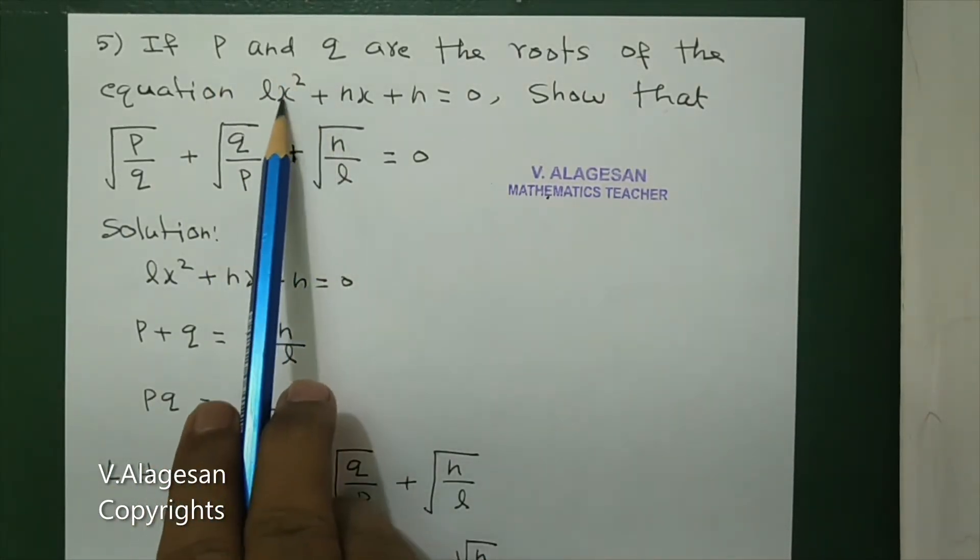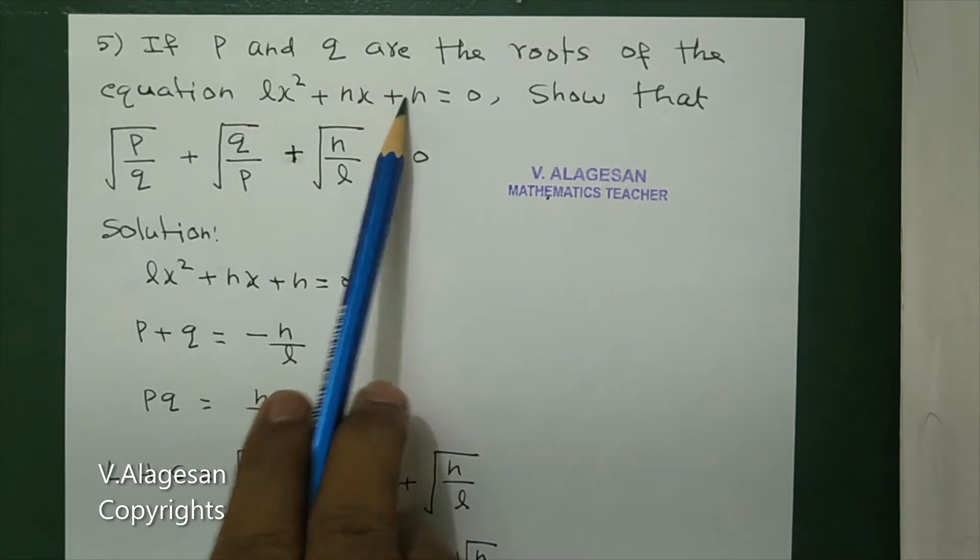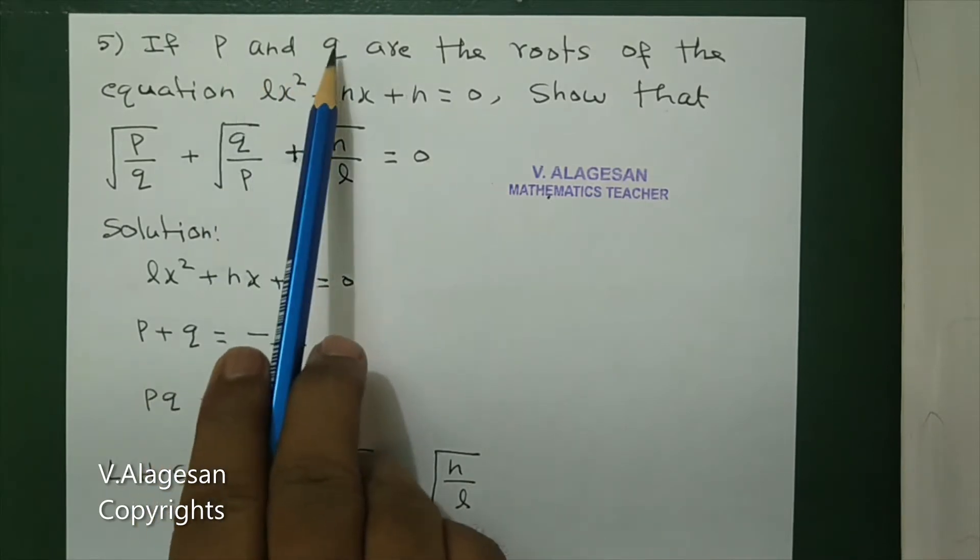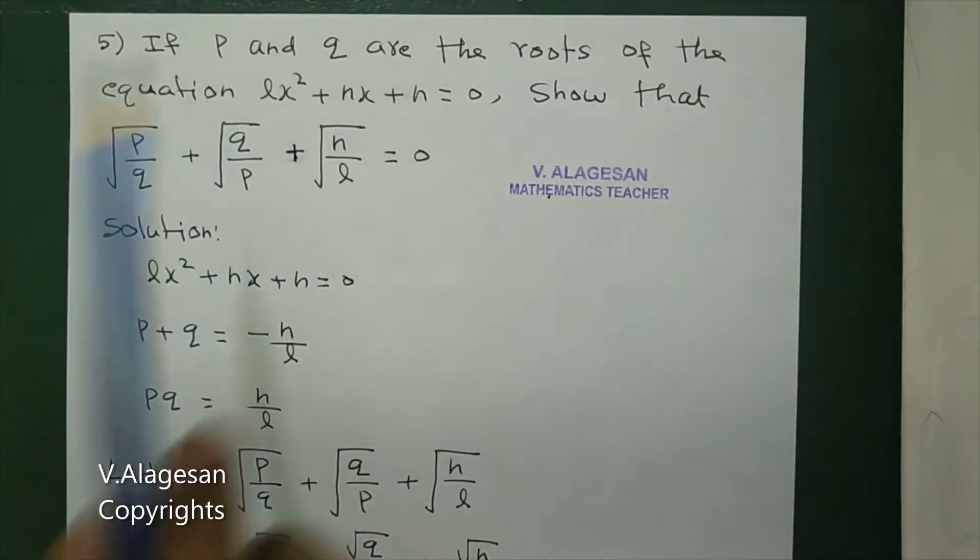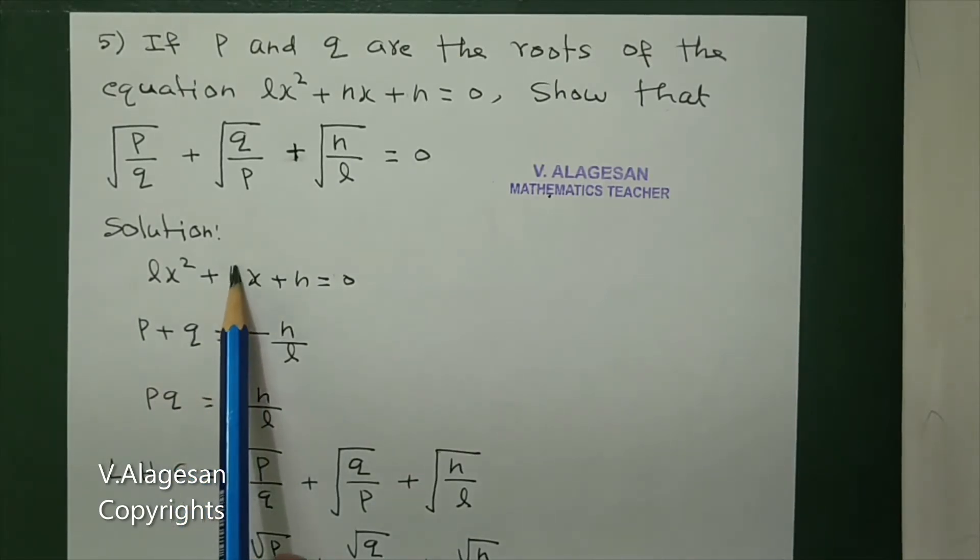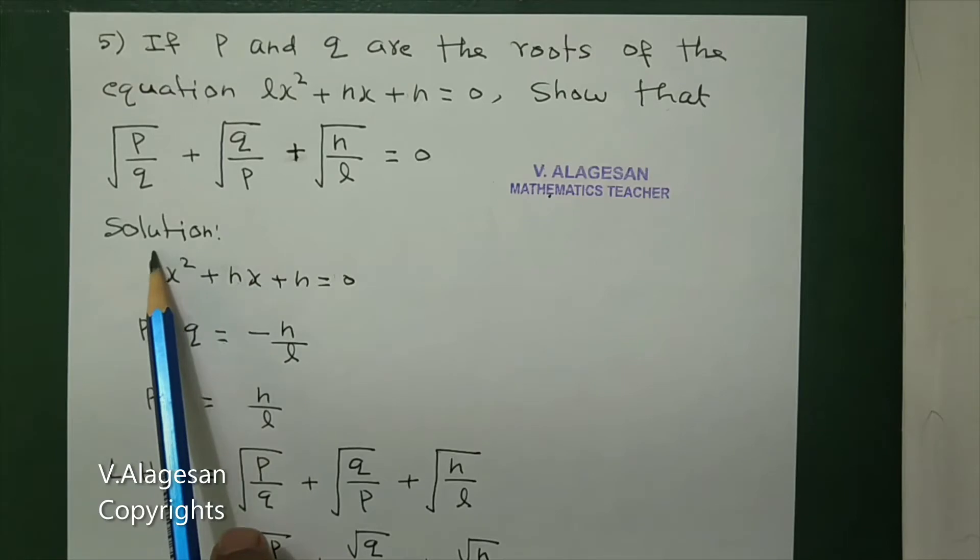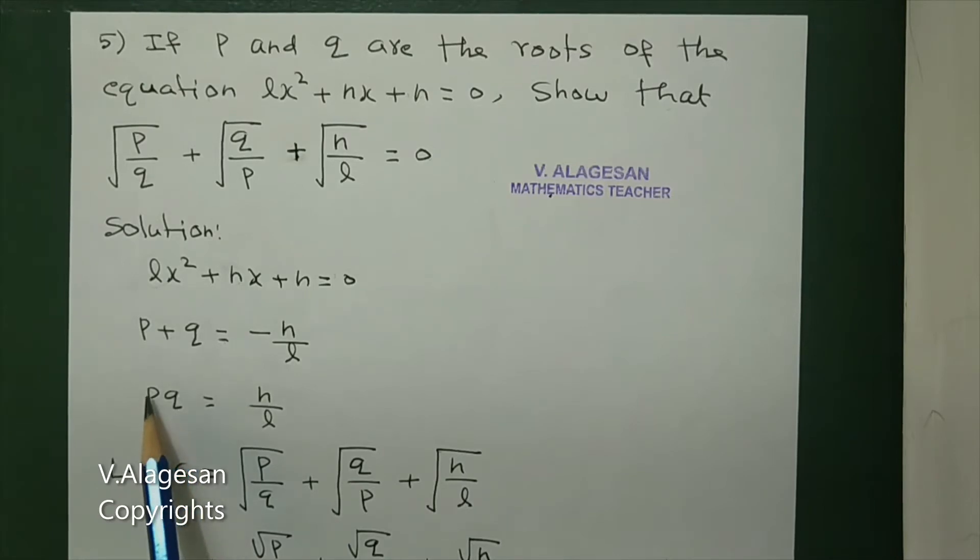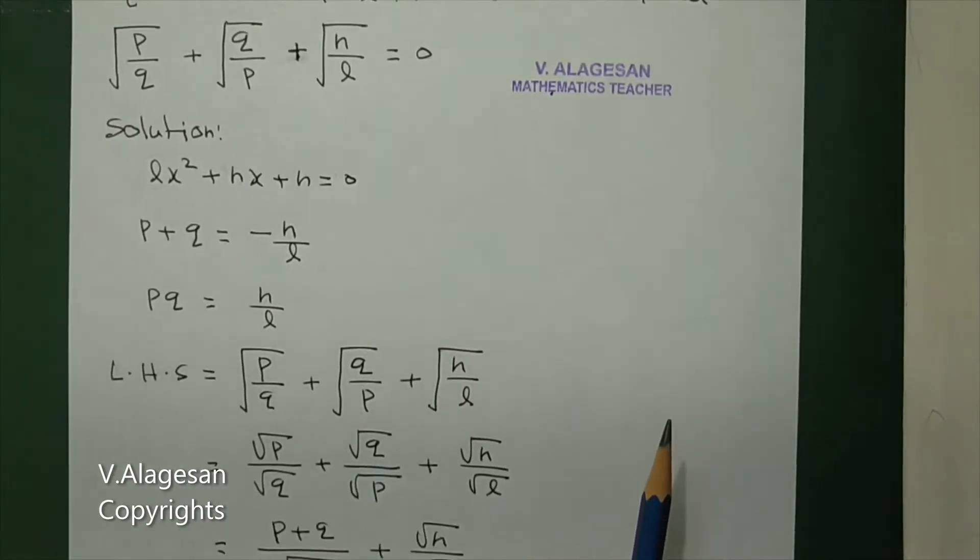P and q are the roots of this equation. Now we have to prove this. The first given equation: find out the sum of roots. Sum of roots: p + q = -n/l (minus coefficient of x by coefficient of x²). Next, product of roots: pq = n/l (constant term by coefficient of x²).